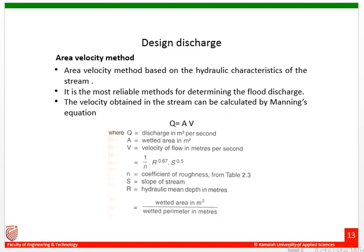The area velocity method is dependent on flow parameters and site conditions. It uses the simple relation Q = A × V, where A is the wetted cross-section area of the stream and V is the velocity of flow. By knowing these two values, you can get the value of Q. These are the three different methods used to get the design discharge.